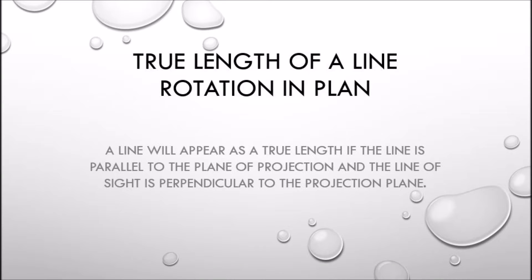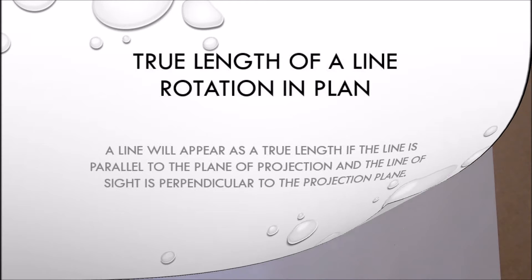The line will appear as a true length if the line is parallel to the plane of projection and the line of sight is perpendicular to that projection plane.